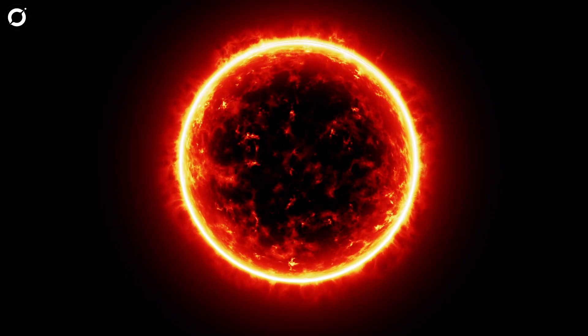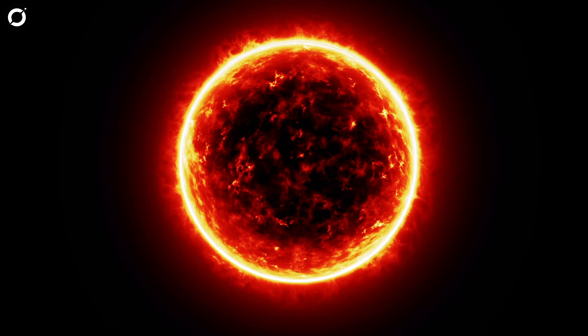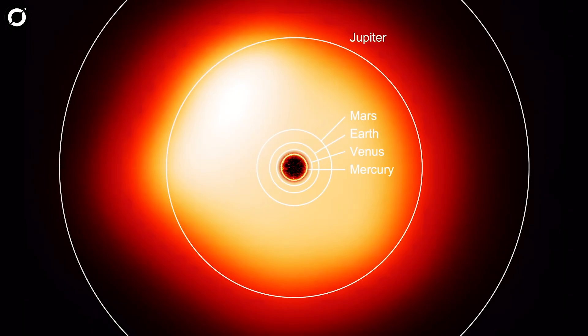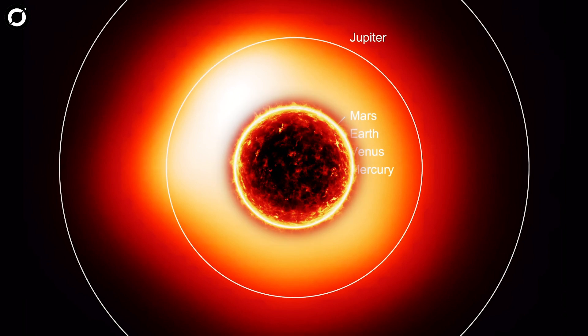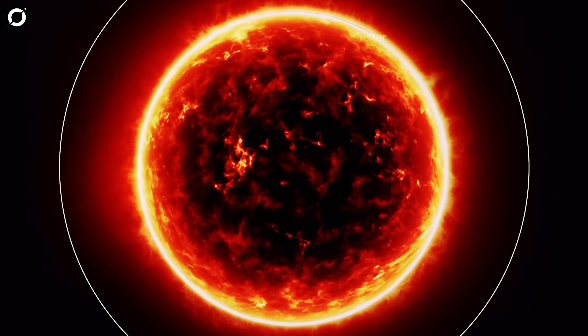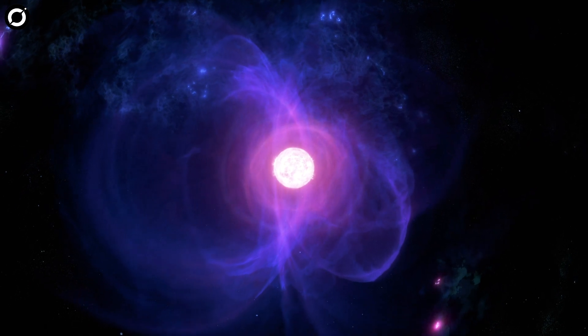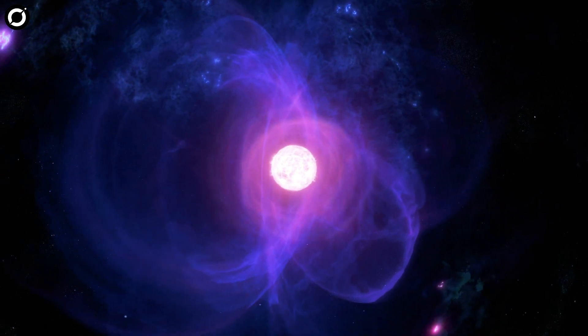Now Betelgeuse is a true giant, with a diameter more than 1,000 times that of our Sun. If you placed it at the center of our solar system, it would engulf the inner planets, including Earth, and go all the way up to Jupiter. Its immense size and mass make it a red supergiant star nearing the end of its life.